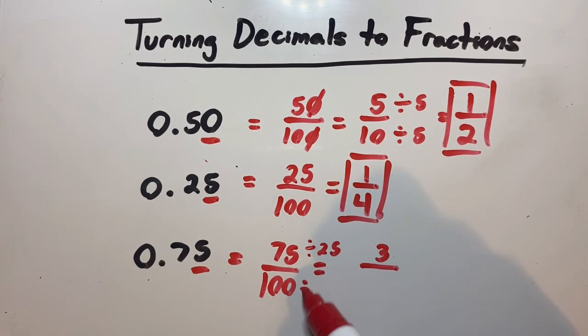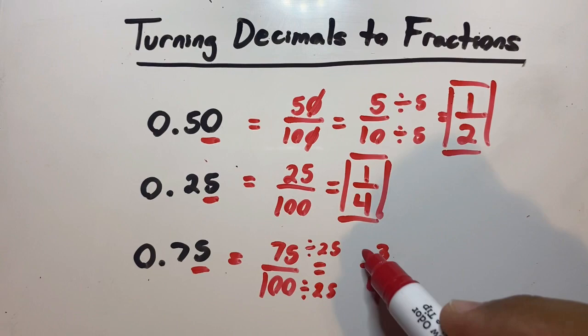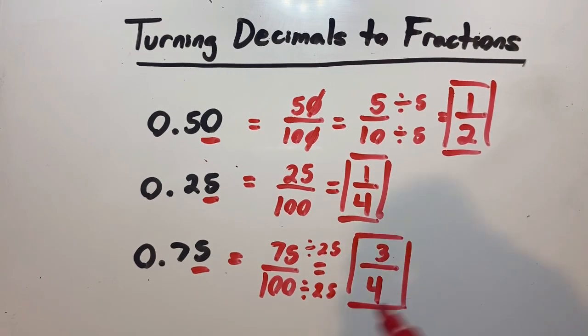This is our answer: 0.75 is the same as 3 over 4.